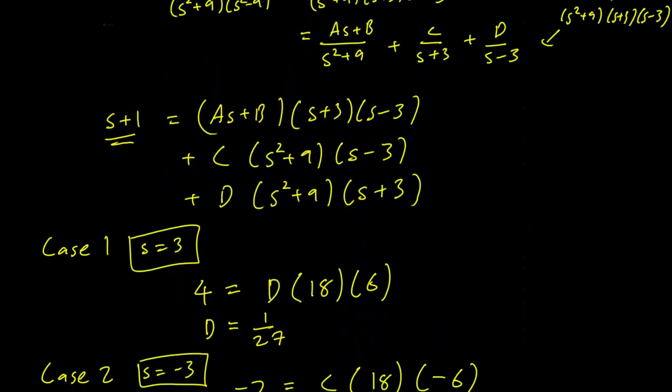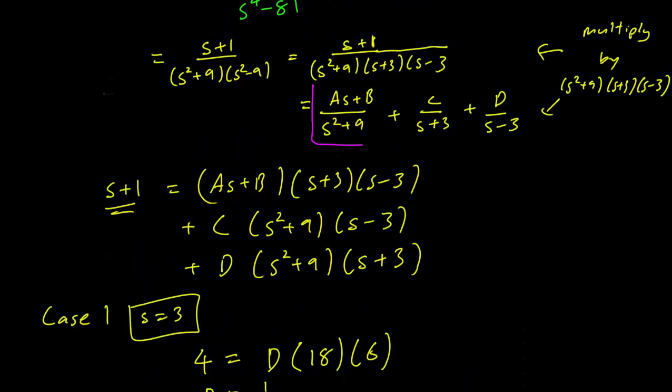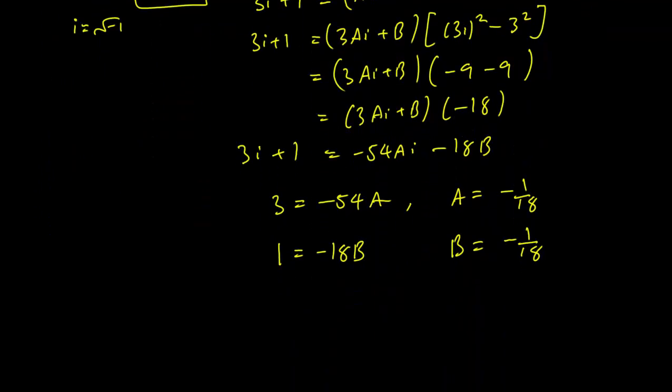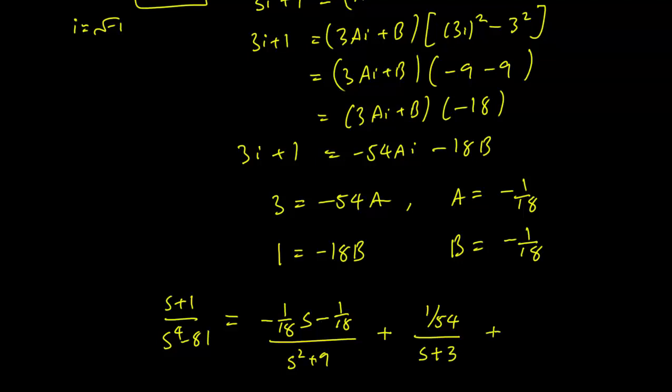And now, just plugging everything in to our original decomposition, we have that our partial fraction decomposition of s plus 1 over s to the fourth minus 81 is equal to minus 1 over 18s minus 1 over 18 over s squared plus 9 plus 1 over 54 over s plus 3 plus 1 over 27 over s minus 3.